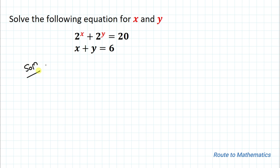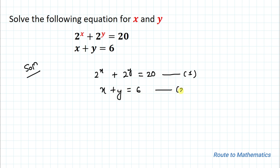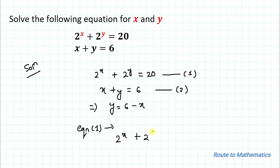Our first equation is 2 to the power x plus 2 to the power y equals 20, and our second equation is x plus y equals 6. From the second equation we can write y equals 6 minus x. Let's put the value of y into our first equation.